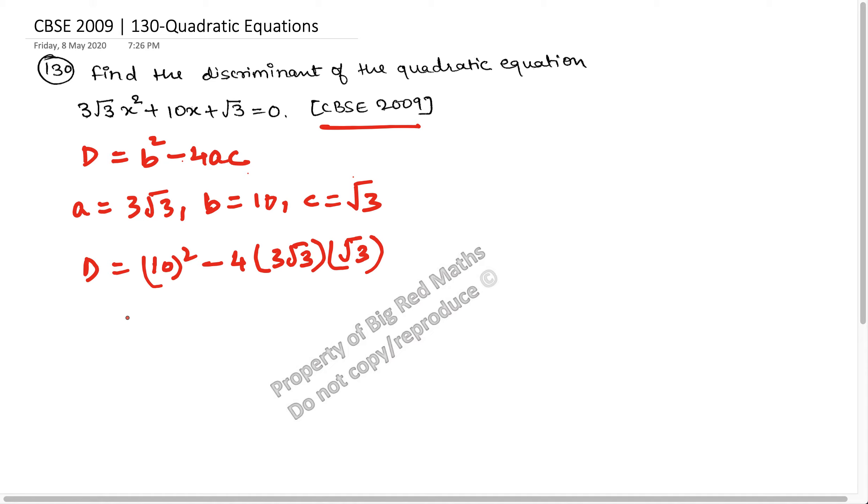9 times 4 is 36, and this is 10 square, 100. So it will be 100 minus 36, and this will be 64. So the discriminant of the quadratic equation is 64.